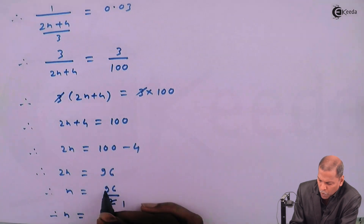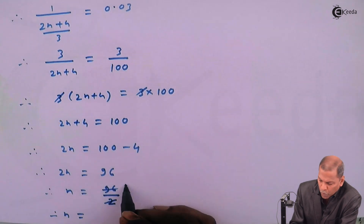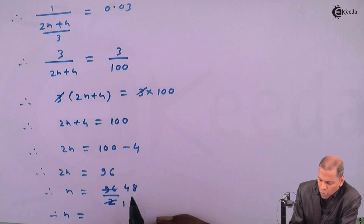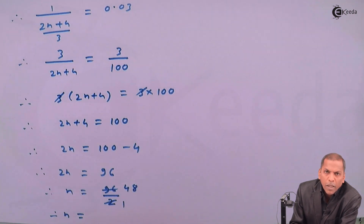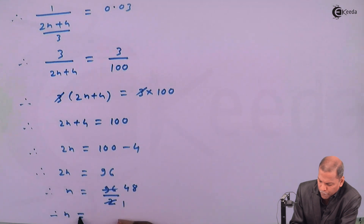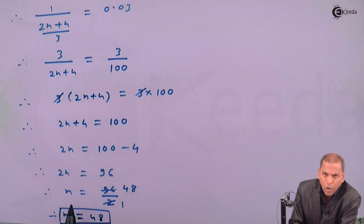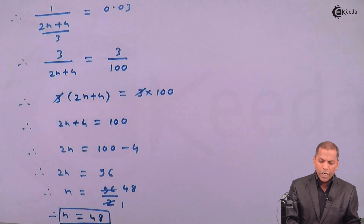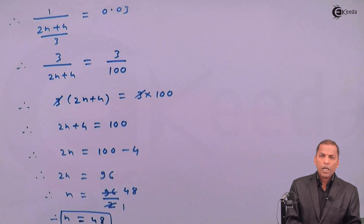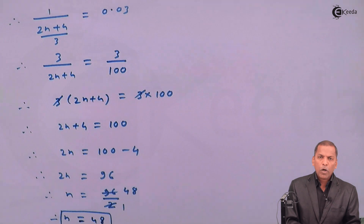Finally, n equals 96 upon 2. So 96 divided by 2 gives 48. So finally we get n equals 48. In this way we find the value of n is equal to 48. This is the required solution for the given problem. Thank you.